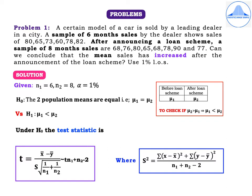Under solution, write: given N1 is 6, N2 is 8 and alpha is 1%. Before the loan scheme, the mean sales is denoted by mu1, and after the loan scheme, the mean sales is denoted by mu2. They have asked us to check whether the mean sales has increased after the announcement of the loan scheme, so we check if mu2 is greater than mu1, which implies mu1 is less than mu2.